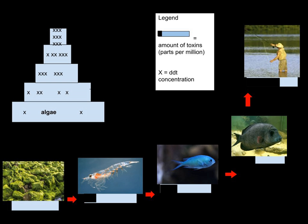For example, herring contains mercury at approximately 0.01 parts per million (ppm) and shark contains mercury at greater than 1 ppm. DDT is thought to biomagnify, and biomagnification is one of the most significant reasons it was deemed harmful to the environment by the EPA and other organizations. DDT is stored in the fat of animals and takes many years to break down, and as the fat is consumed by predators, the amounts of DDT biomagnify. DDT is now a banned substance in many parts of the world.